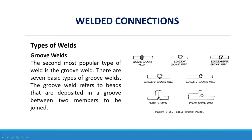Groove Welds. The second most popular type of weld is the groove weld. There are seven basic types of groove welds, which refer to beads deposited in a groove between two members to be joined. The types include: square groove weld, single V groove weld, single U groove weld, single J groove weld, flare V weld, and flare bevel weld.